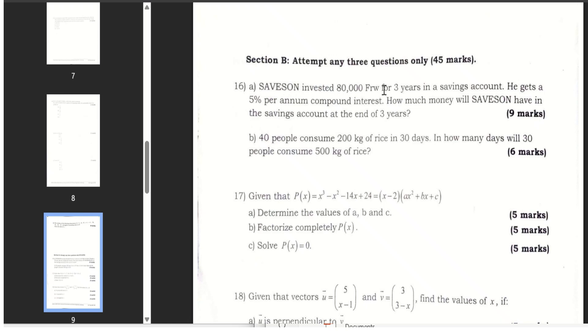Saveson invested 80,000 for three years in a savings account. He gets an interest of 5%. How much will Saveson have in his saving account at the end of four, three years? Forty people consume 200 kilograms of rice in 30 days.